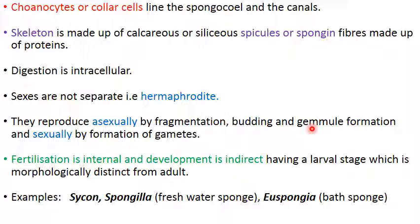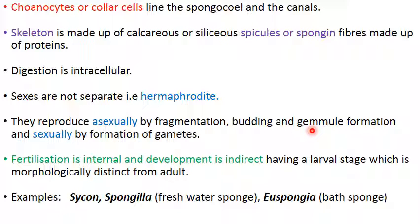Another form of asexual reproduction is gemmule formation. A gemmule is a cluster of cells called amoebocytes covered by spicules. Gemmule formation occurs during unfavorable conditions — for example, when there is a shortage of water. The cells get covered by spicules and remain dormant. When favorable conditions return and water is available, there is an apical opening in the gemmule from which the amoebocytes emerge and each develops into a new sponge.